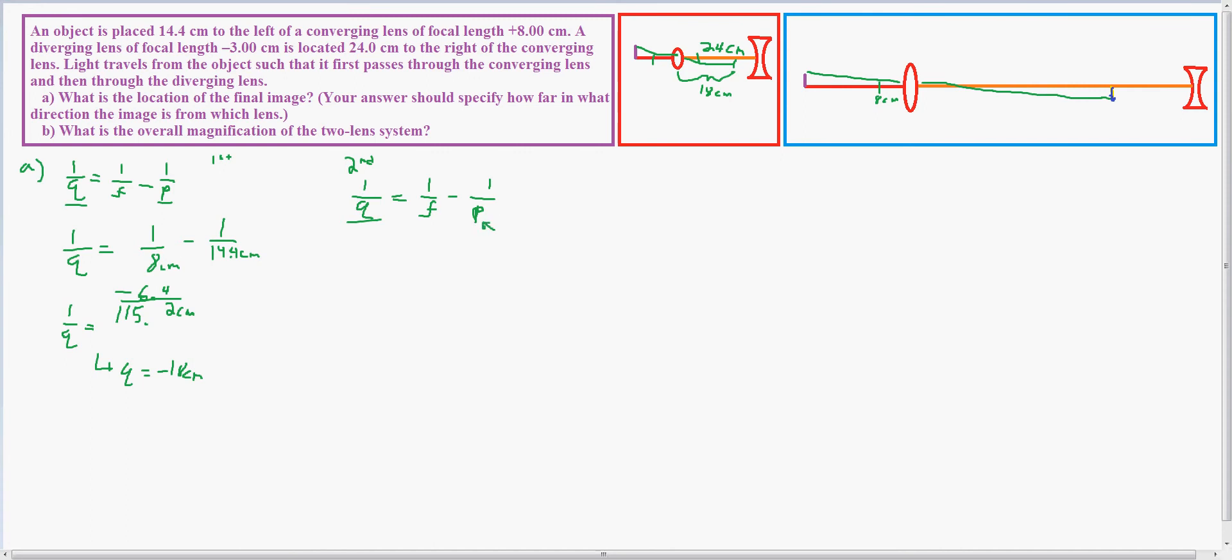In this case, it's not really the object distance, it's the object image, is what I would call it. So we just plug everything in again. For this we do 24 total centimeters minus 18 centimeters, which gives us a total of 6 centimeters for this, because the image is 6 centimeters away from the next lens.